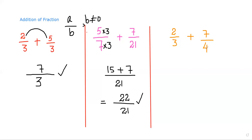The third example has denominators 3 and 4. There is no number I can multiply with 3 to get 4, so in this case we take the denominator 4 and multiply it up and down in the first fraction, and take the denominator 3 and multiply it up and down in the second fraction.